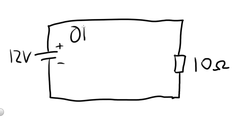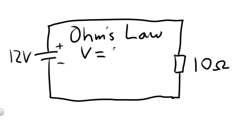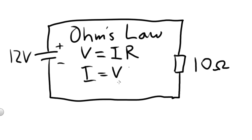Ohm's Law states that voltage equals current, represented by I, multiplied by resistance — V equals IR. So in order to calculate current, we can go I equals V over R. That's just using simple algebra.